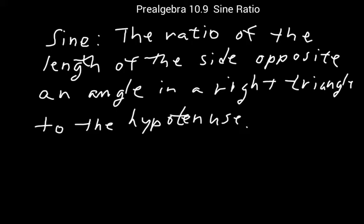The sine ratio always involves a side opposite an angle. It can't be the right angle, but one of the other two angles of a right triangle. So you go opposite one of the angles and compare that length to the hypotenuse, and we'll talk about what the hypotenuse is next.